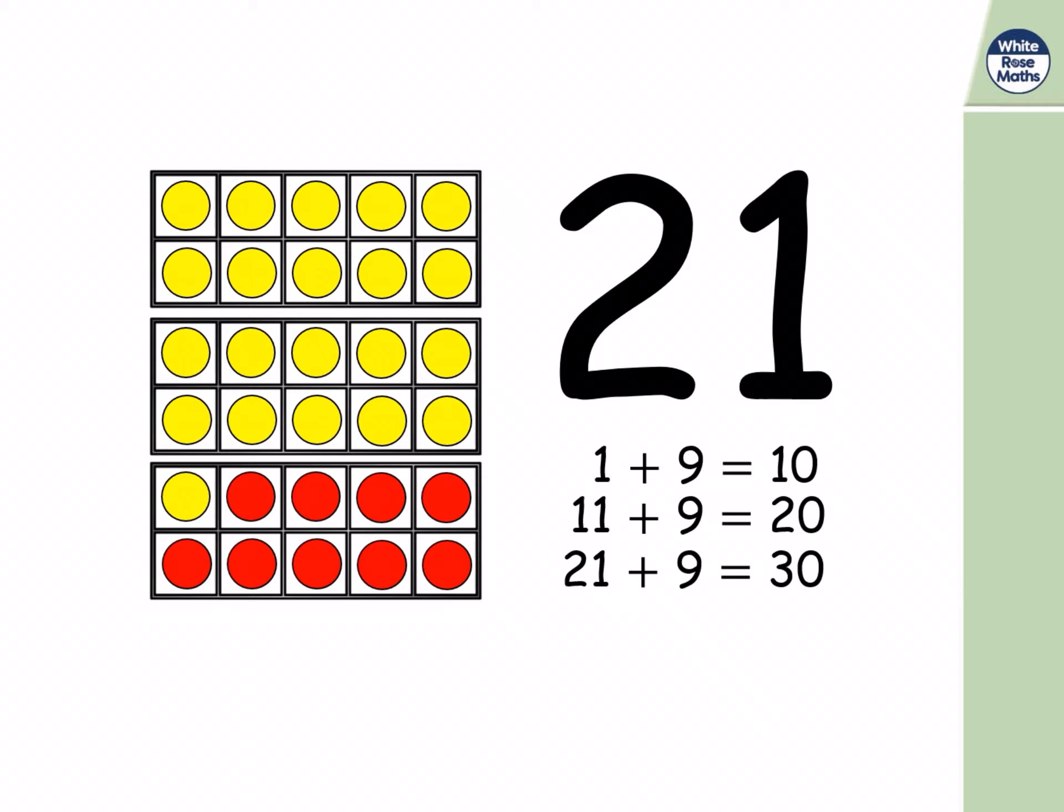Nine red counters. You could play this game with a friend. One of you could put down some red counters, and the other has to complete the bond with some yellow counters. Or one of you could say a number, like five, and the other one has to quickly say the number to complete the bond, which would be five. Five and five makes ten.